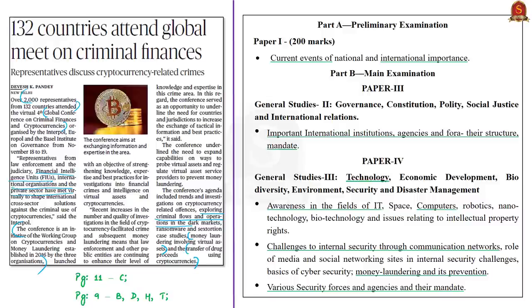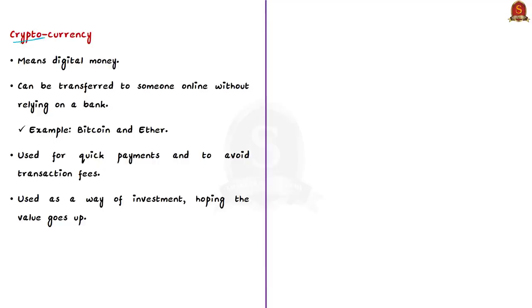In this context, it is important to understand cryptocurrency and how it is used by non-state actors for money laundering. First, what is cryptocurrency? Breaking down the word: 'crypto' means hidden or secret, reflecting the secure technology used to record ownership and make payments between users. 'Currency' tells us it is a type of electronic cash. So cryptocurrency is digital money — there is no physical coin or bill. It is all online. You can transfer cryptocurrency to someone online without relying on a bank.